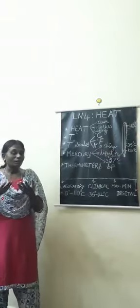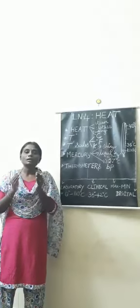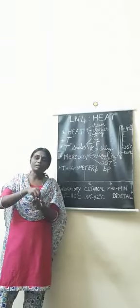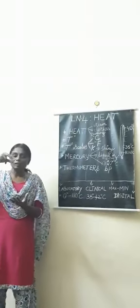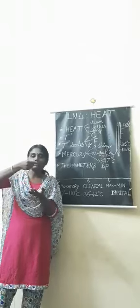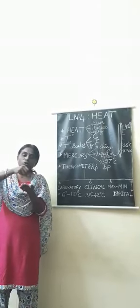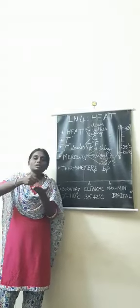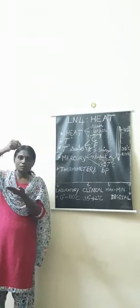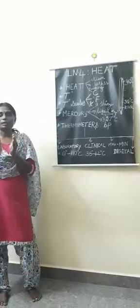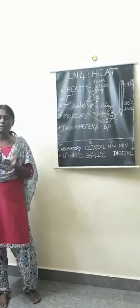How can we measure the temperature of chemicals or any liquids using a laboratory thermometer? For whichever liquid you want to measure, you have to keep it in a container. Then you have to keep the laboratory thermometer in a vertical position. The bulb structure should be deep into the solution, and the bulb should not touch the end of the container. Then the mercury level will start rising and will remain at one position — then we can take the reading. This is how we measure the temperature of chemicals or liquids using a laboratory thermometer.